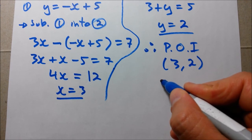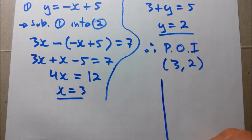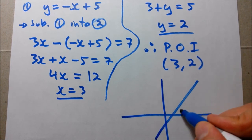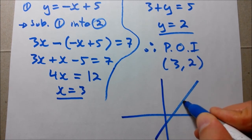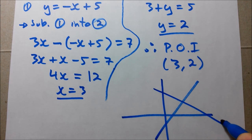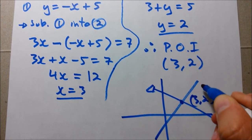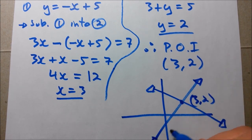But essentially, if you were to graph both, you would see that these lines intersect at 3, 2. So let me just make something up. I think roughly it would look like this. And these would be the coordinates, 3, 2.